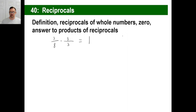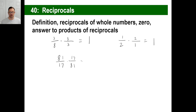I think probably we all know that the answer is eight-thirds. You can take a fraction, flip it, and multiply it by its reciprocal, and you get one. For example, one-half times what gives you one? Two — or as a fraction, that's two over one. How about 81-seventeenths? You multiply it by 17 over 81, and that gives you one.